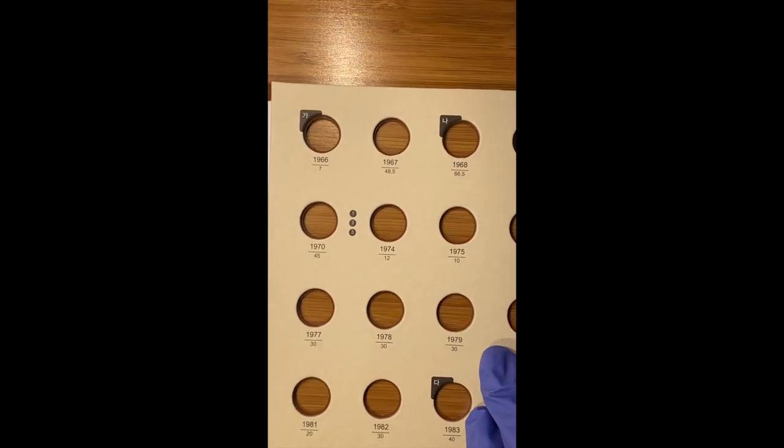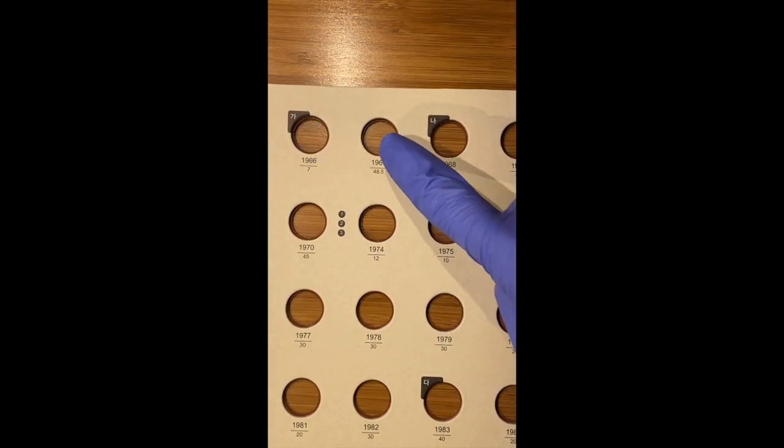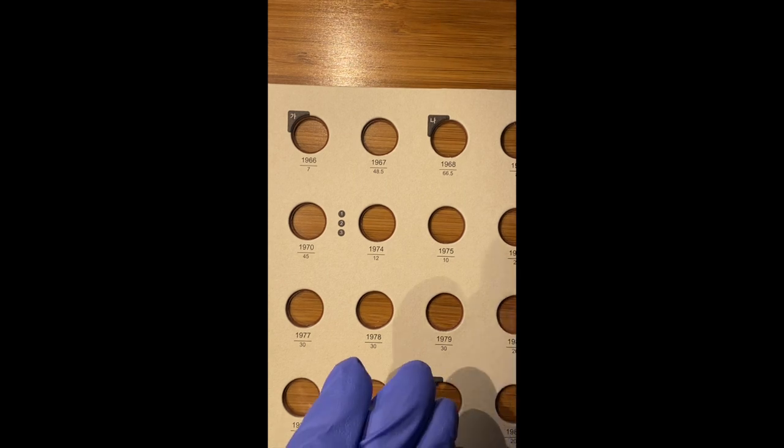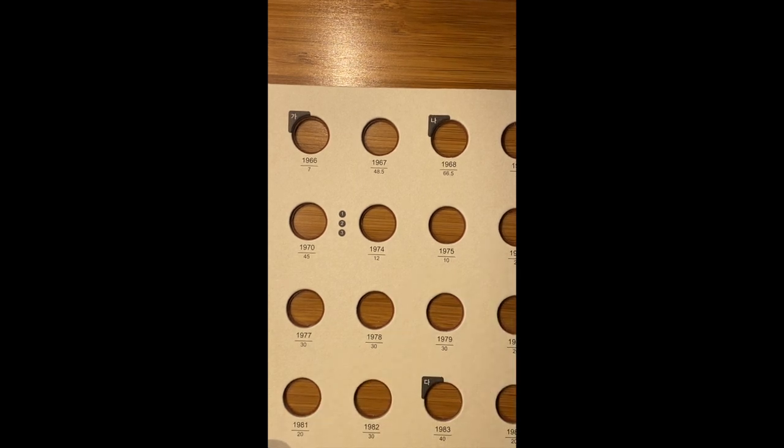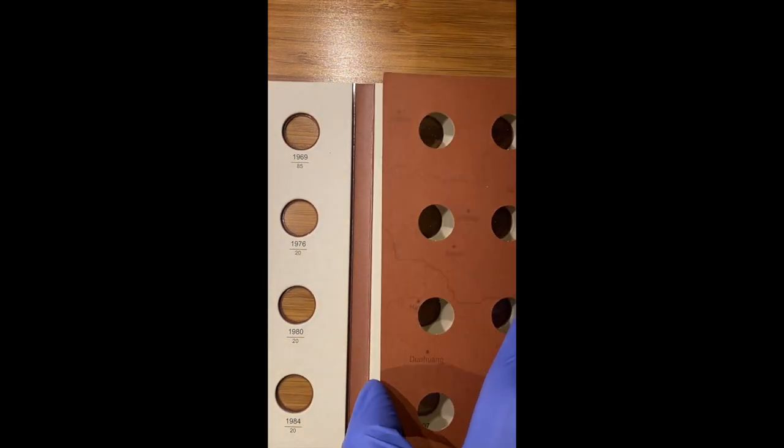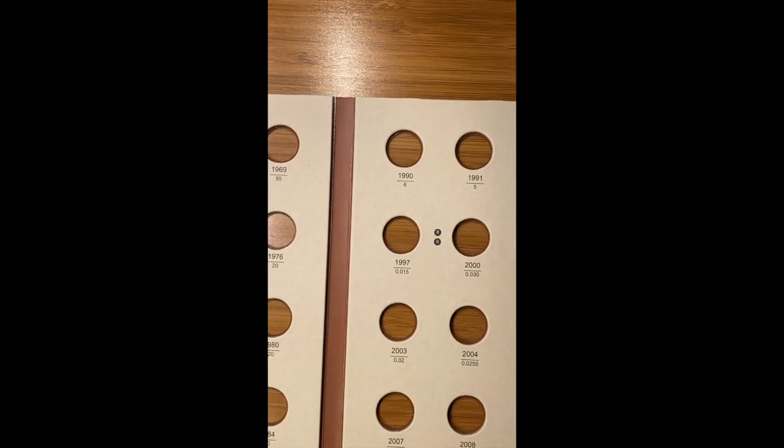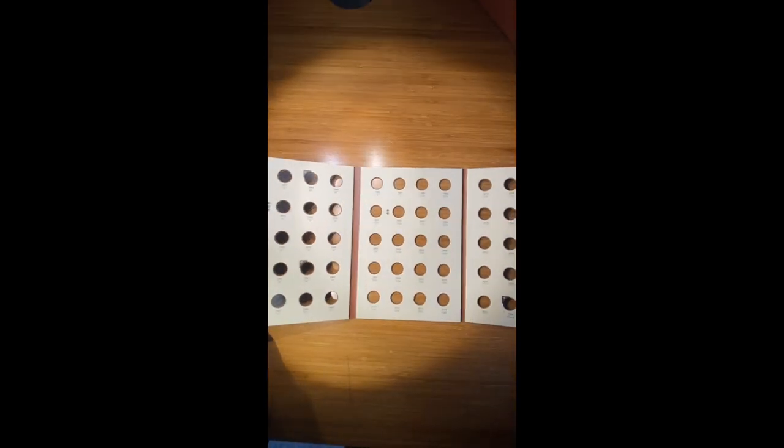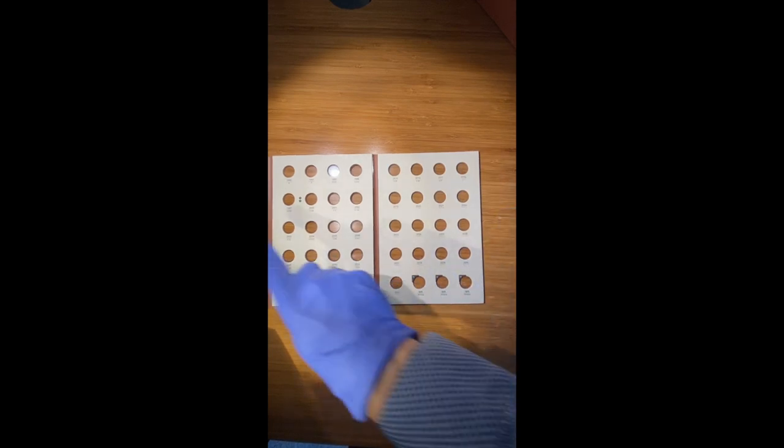A few important things to notice here are the series identifiers you see here noted as Korean alphabet letters which correspond to series one, two, three, or four which again denote the changes to the coin in either composition and or design. As you can see, these folders are essentially year sets for each coin denomination with holes to accommodate a coin for each year in which the denomination was produced.